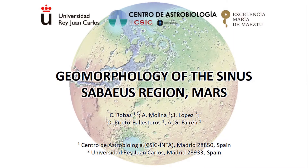My name is Cristina Robas. I work in the Planetary and Habitability Department at the Astrobiology Center in Madrid, Spain. I'm doing my PhD on regional evidences of hydrological cycle on Mars under the supervision of Alberto Fairen, Olga Prieto, and Ivan López. I would like to introduce our preliminary geomorphological map, which is a first step of my PhD.